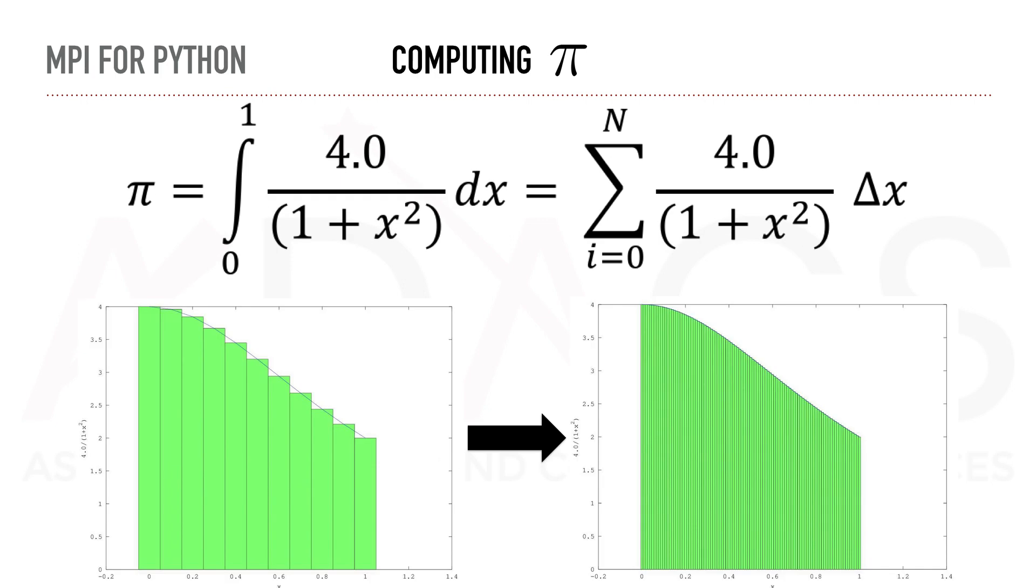As we increase delta x in this formula, we will get closer and closer to the real value of PI. As you can imagine, as we increase the number of steps in this computation, the longer it will take to be computed, especially in a serial manner.